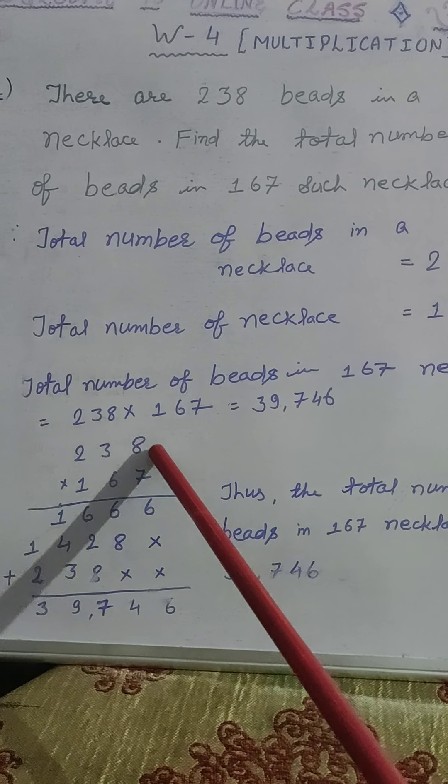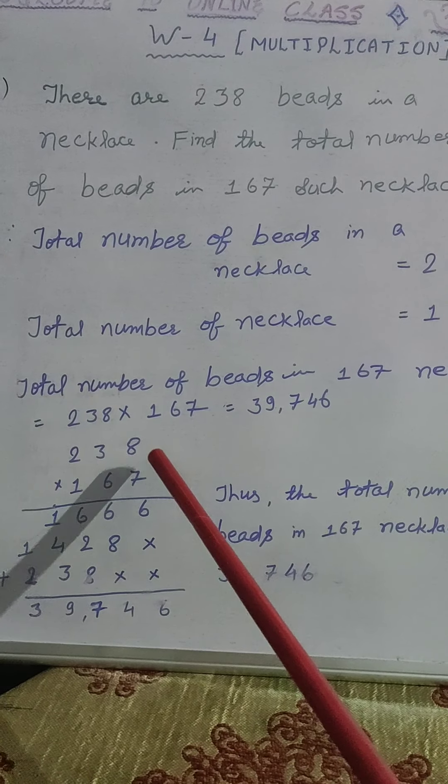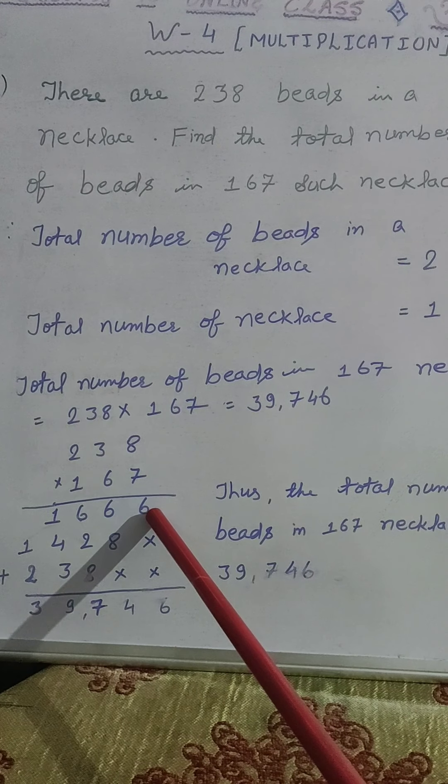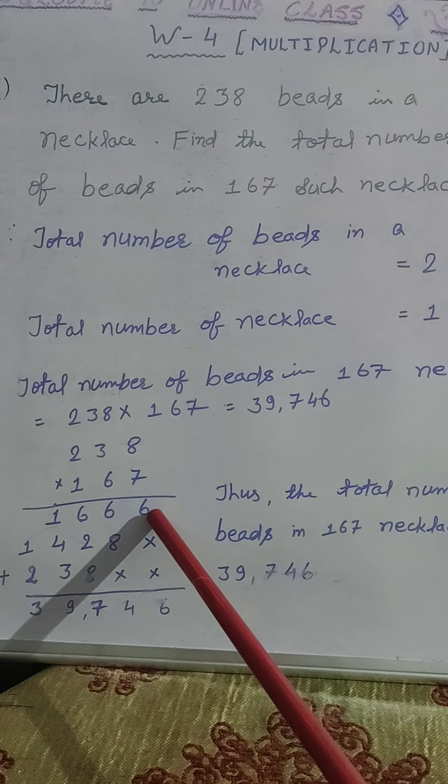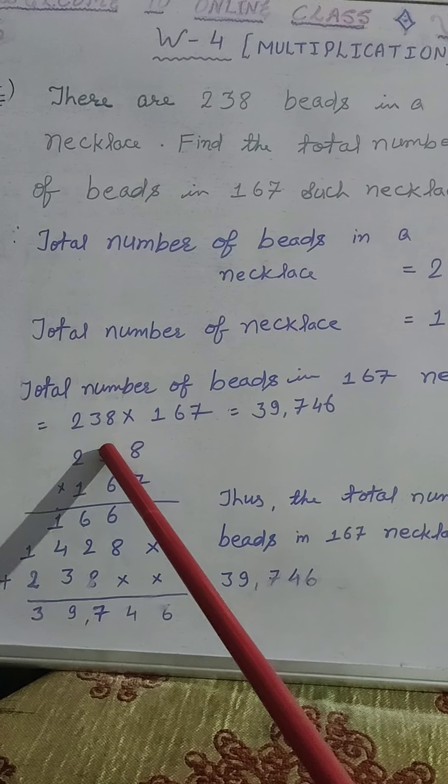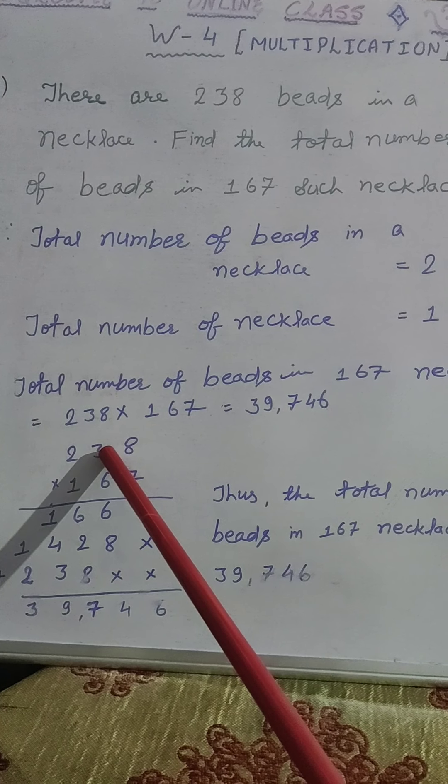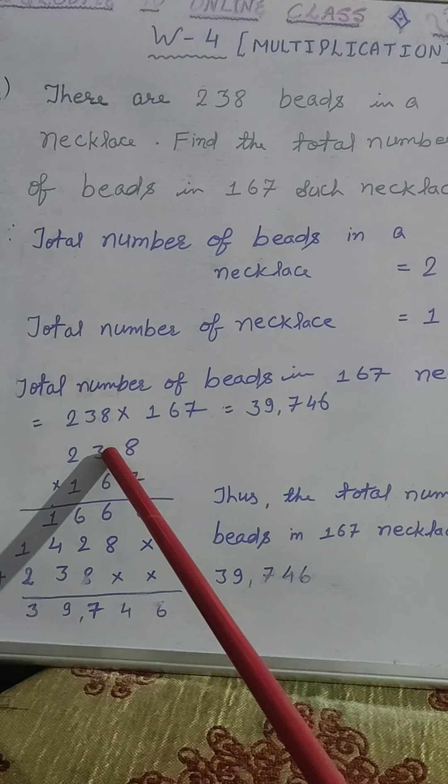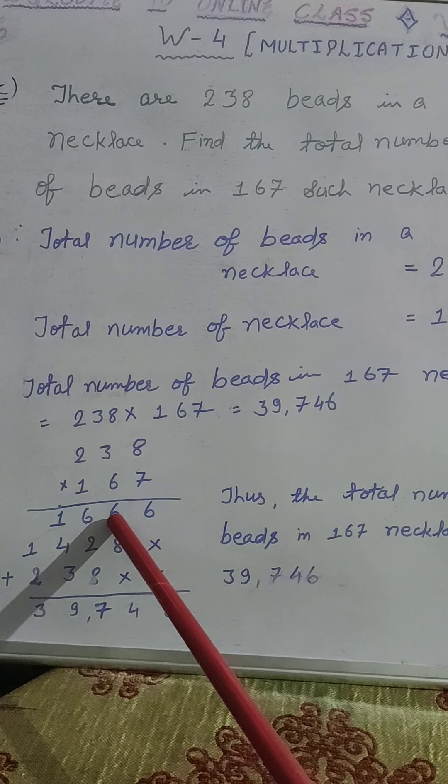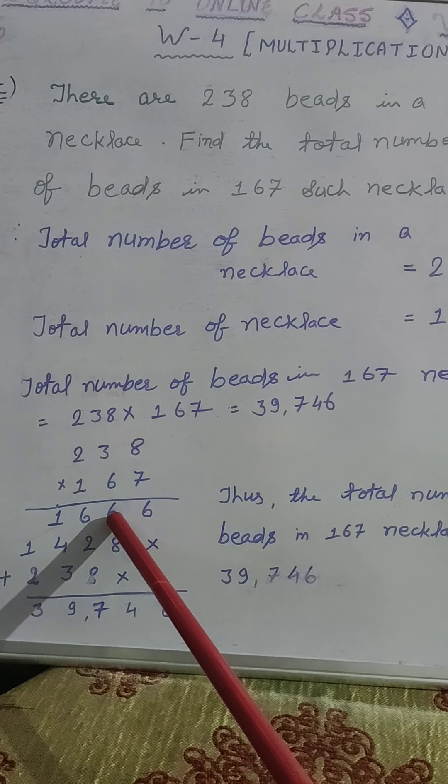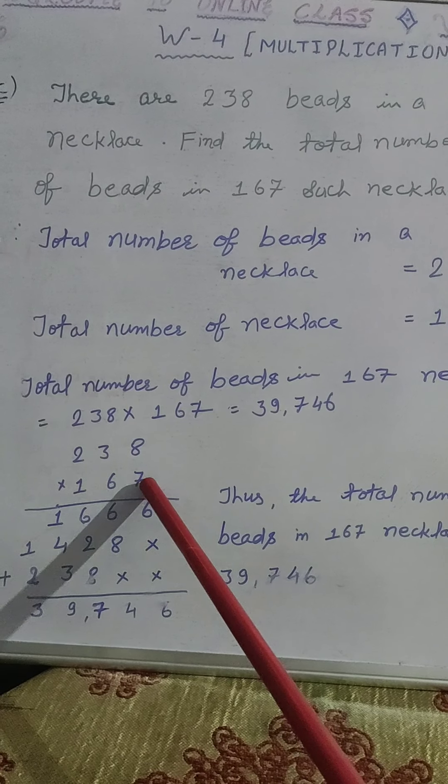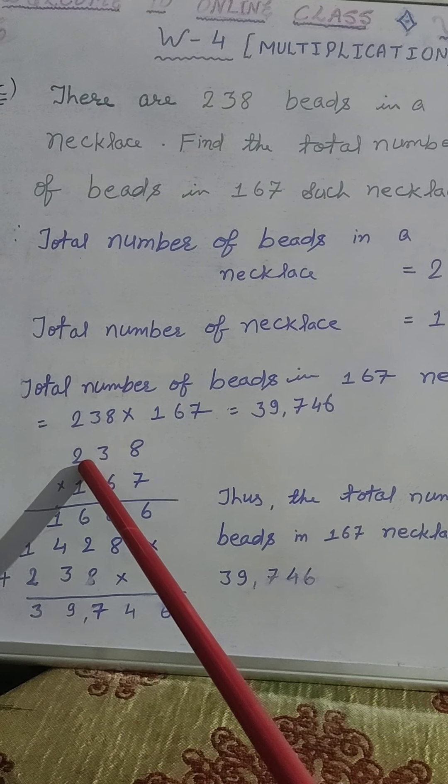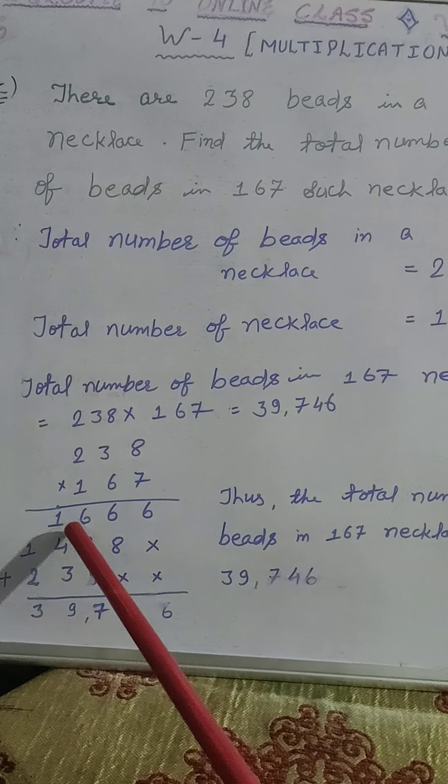8 times 7 is 56. We will write here 6 carry 5. 7 times 3 is 21 plus carry 5 that will be 26. We will write here 6 carry 2. 7 times 2 is 14 plus carry 2, 16.